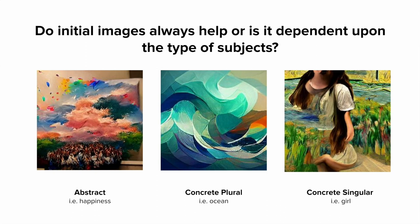For example, does an initial image help if you're generating something abstract like 'happiness'? Or is it more helpful for something concrete singular like 'a girl'? In between there are concrete plural subjects like oceans, forests, and fires, which have less natural structure but are physically realized. We wanted to understand whether image prompts help across the entire abstract-to-concrete spectrum.